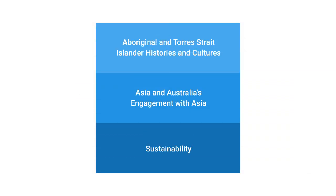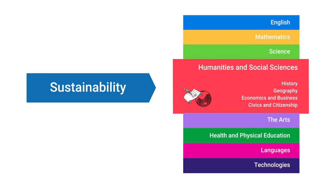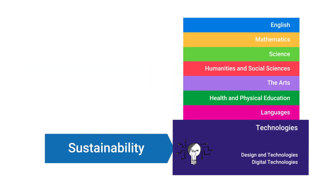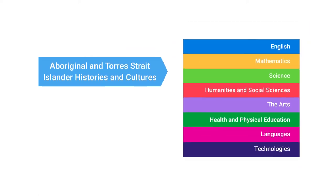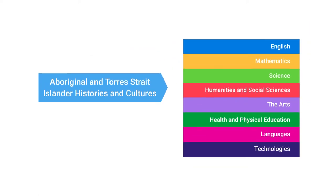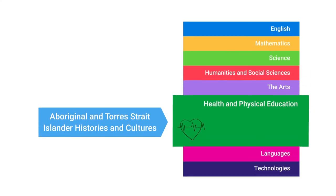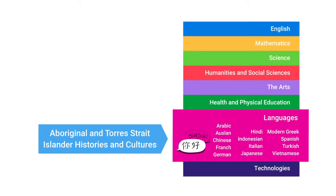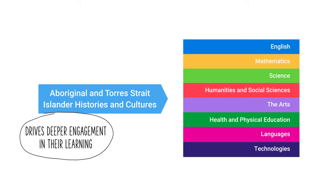For example, the sustainability cross-curriculum priority is woven through science, the humanities and social sciences, and technologies curriculum. While the Aboriginal and Torres Strait Islander history and culture priority can be applied across all learning areas and subjects for a deeper understanding of Australia's history and the world's oldest living culture. This particular cross-curriculum priority also gives Aboriginal and Torres Strait Islander students the opportunity to see themselves, their cultures and their identities reflected in what they're taught, to drive deeper engagement in their learning.